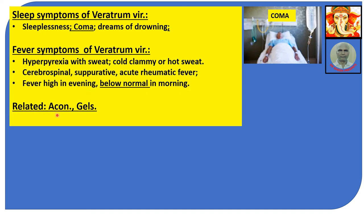Related medicines: Aconite and Gelsemium. Aconite is certainly similar because the symptoms of Veratrum Viride come on very suddenly, like a storm — as do those of Aconite and Belladonna. With this, the video ends. Any difficulties, please report in the comment section — I will certainly respond.